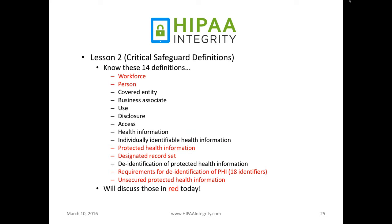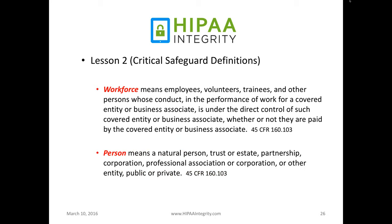There are a number of definitions — well over 100 pertaining to each of these rules — but there are 14 key definitions that we want trainees to focus on. It's important to focus on and understand these because there's a lot of misunderstanding. For example, a lot of people think workforce is only employees, but it covers anyone who is under the direct control of a covered entity or business associate, so it could be an intern or a volunteer, and they have to be trained as well.